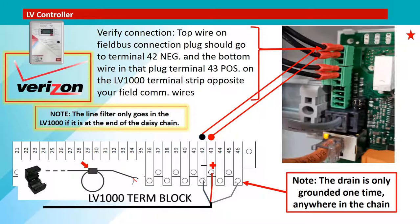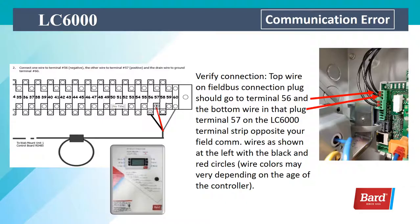The bottom wire in that plug goes to terminal 43, which is marked positive on the LV 1000 terminal strip — opposite the wires you're connecting in the field. The line filter only goes on the LV 1000 if it's at the end of the daisy chain, and the drain is only grounded one time anywhere in the chain. If you're working with an LC 6000, the top wire on the field bus connection plug should go to terminal 56 and the bottom wire to terminal 57, opposite your field communication wires as shown with the black and red circles.